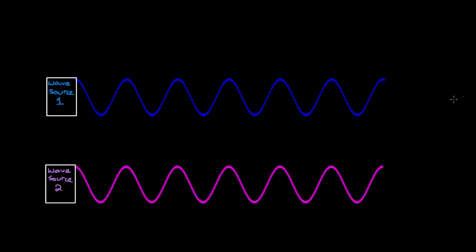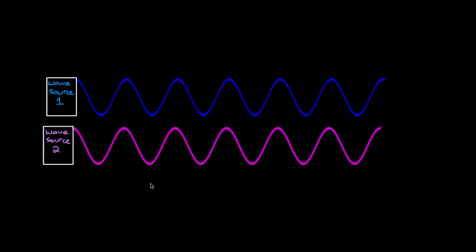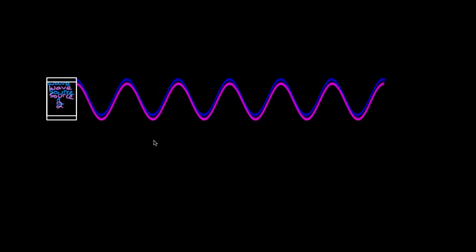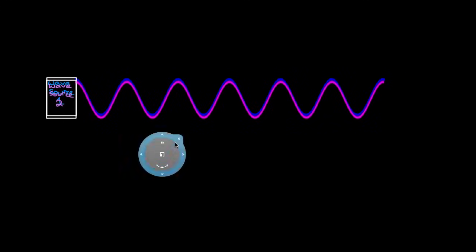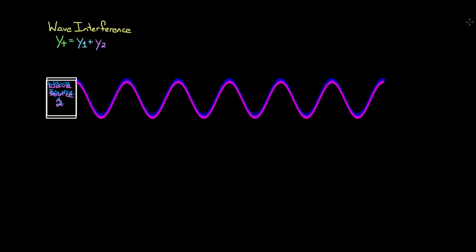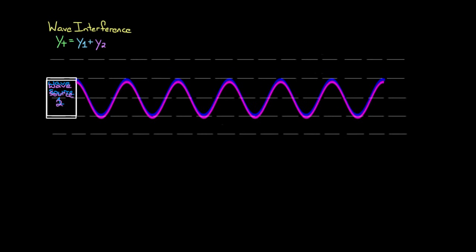Now let's say you've got a second wave source. If we take this second wave source and put it basically right on top of the first one, we're going to get wave interference, because wave interference happens when two waves overlap. If we want to know what the total wave is going to look like, we add up the contributions from each wave.